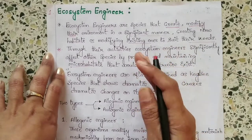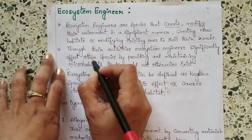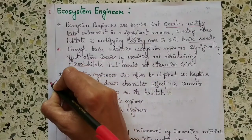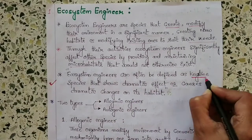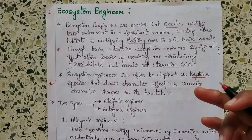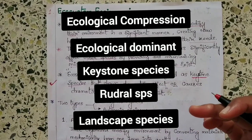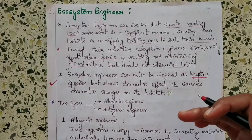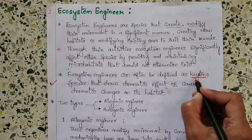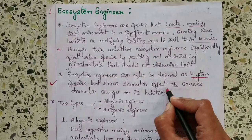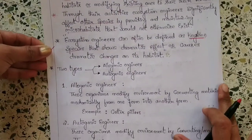By their activities, ecosystem engineers are helpful for other species also, because they create micro habitats which are useful for other species as well. Ecosystem engineers can often be defined as keystone species — I explained keystone species in a previous video. Ecosystem engineers sometimes cause dramatic changes on their habitat. There are two types: allogenic engineer and autogenic engineer.